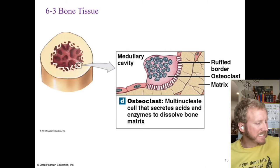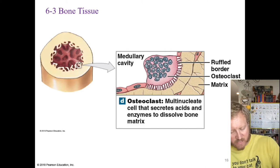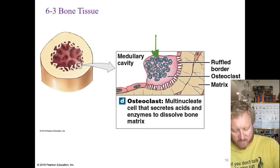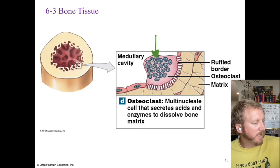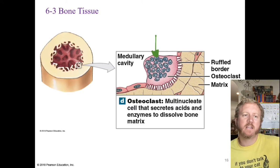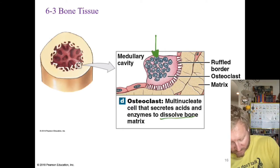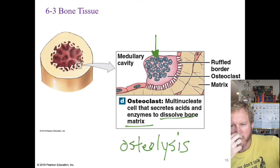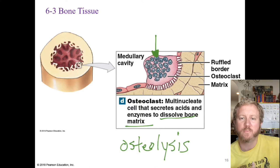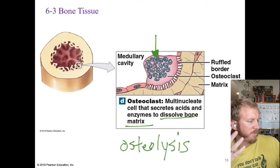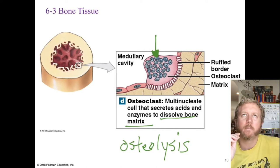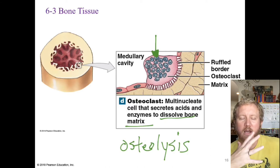Osteoclasts are multinucleate cells — they have more than one nucleus — and come from the same class of cells that produce macrophages. They are primarily responsible for dissolving bone and releasing stored materials. This process is called osteolysis — 'osteo' meaning bone and 'lysis' meaning breaking down. The body does this to release minerals stored in the bones that it needs.